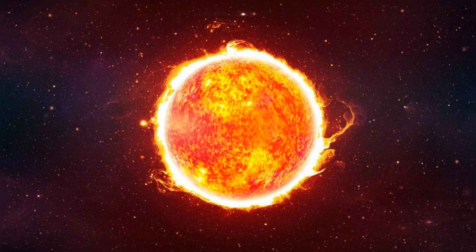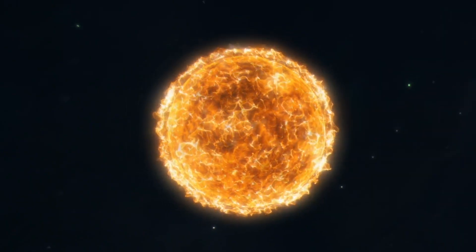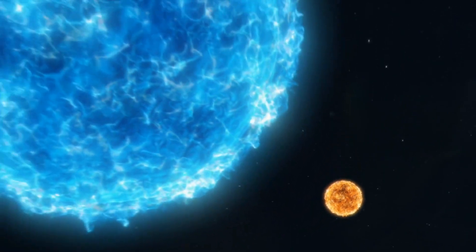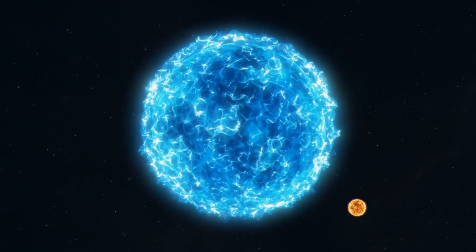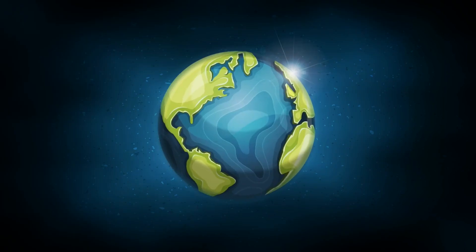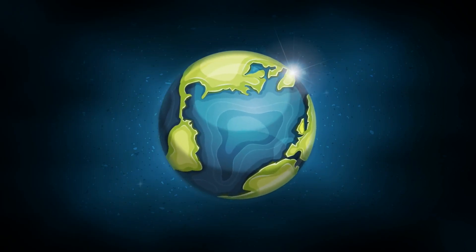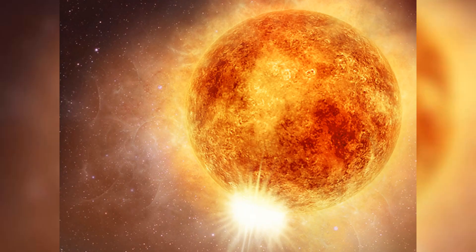Nestled within Orion, Betelgeuse stands as one of the most luminous and massive stars observable from Earth. With a radius approximately 950 times that of our Sun, if placed at the center of our solar system, it would stretch beyond Jupiter's orbit. This immense size comes with a significant cost. Betelgeuse burns its nuclear fuel at a prodigious rate, leading to a relatively short lifespan. Located just 650 light-years from Earth, it's one of the closest red supergiants to us, making its behavior and potential demise a subject of great interest.